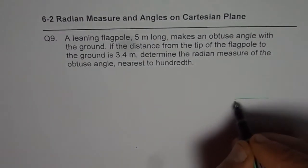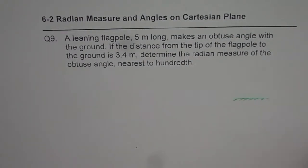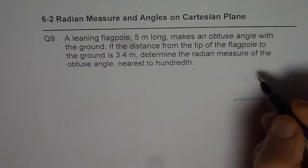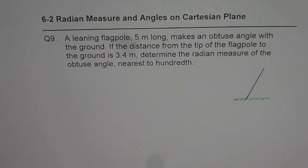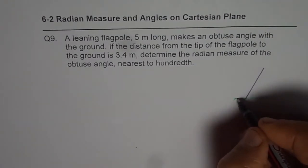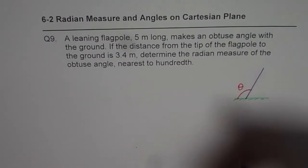So let's sketch it. Let's say this is the ground and we have a flagpole which is leaning. I am purposely making it highly leaned and this angle is the obtuse angle. Let's call this angle theta.